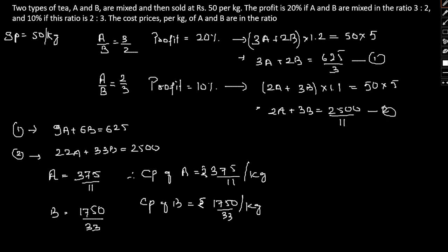Now we are asked to find the ratio of CP of A to CP of B. That can be written as 375 by 11 divided by 1750 by 33. If I cancel this out, this comes out to be 3. After simplifying further, CP of A by CP of B will be 9:14, which will be our required answer.